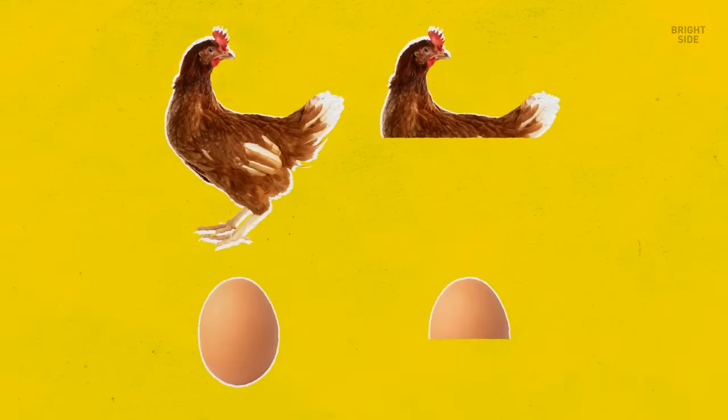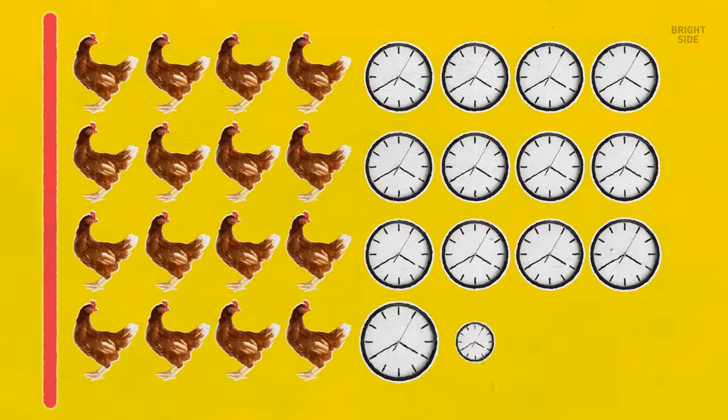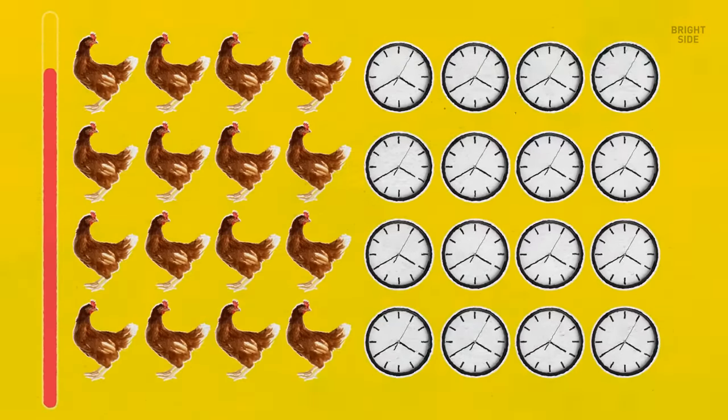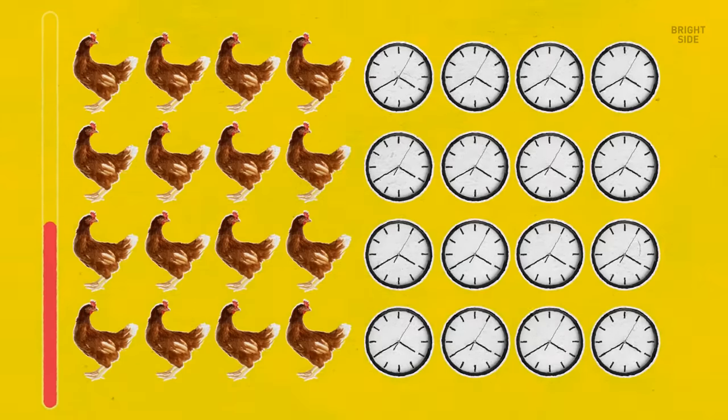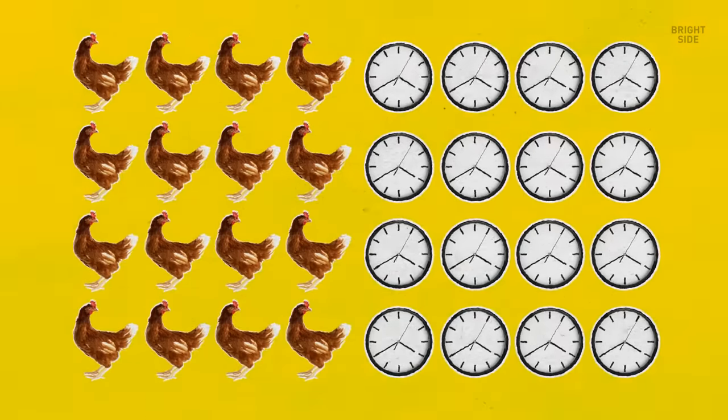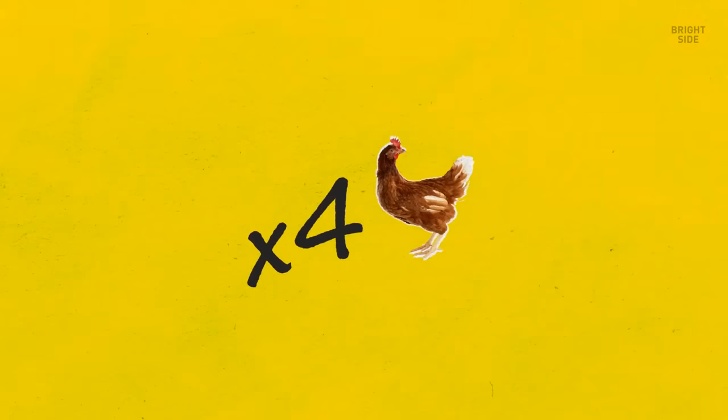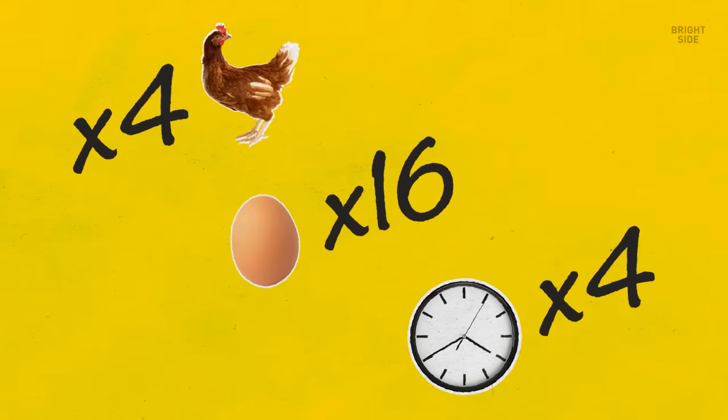A hen and a half lay an egg and a half in a day and a half. How many eggs will half a dozen hens lay in half a dozen days? 24. If there are 4 times more hens and they have 4 times more days, they will lay 16 times more eggs. 16 times 1.5 equals 24 eggs.